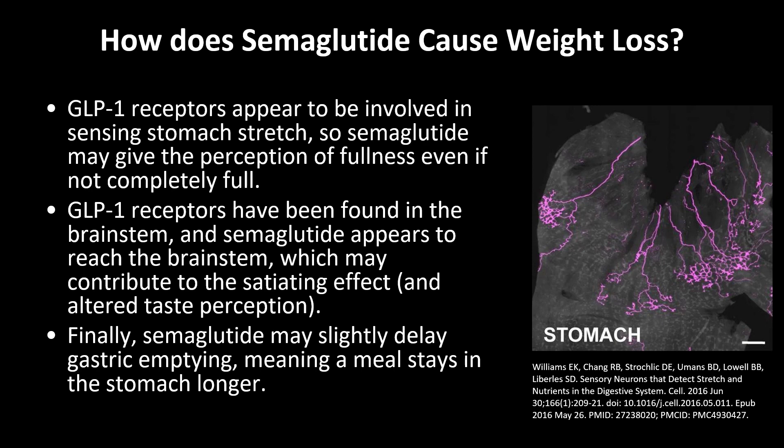Finally, the GLP-1 receptor was found in the brain stem, which may also be why semaglutide induces satiety — which is lack of hunger. Interestingly, part of the brain stem is involved in inducing nausea and vomiting, which may be why semaglutide can cause these side effects if the dose is too high.